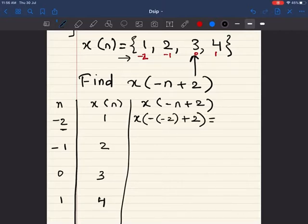You understood what I did here? I am simply substituting n with the value -2. This minus sign that is there will stay, do not get confused. So this is what I am going to get plus 2. So it is going to be x(4), the value of which we do not know, so it is simply going to be 0.